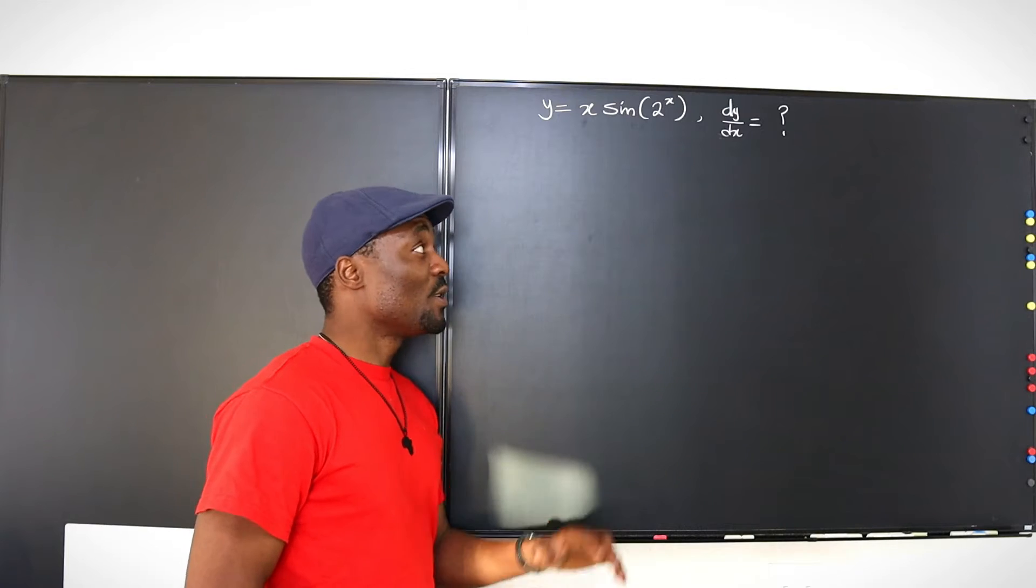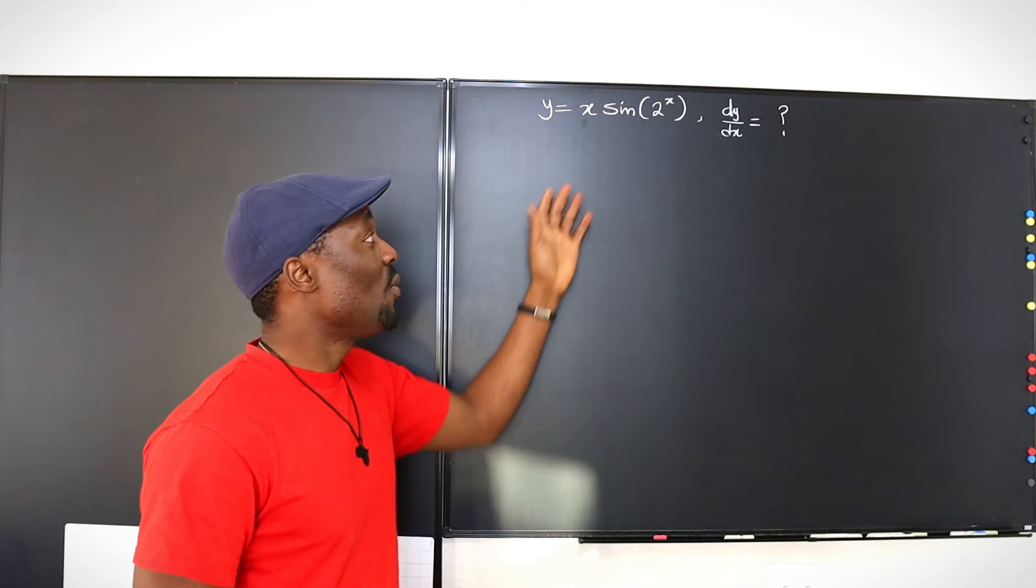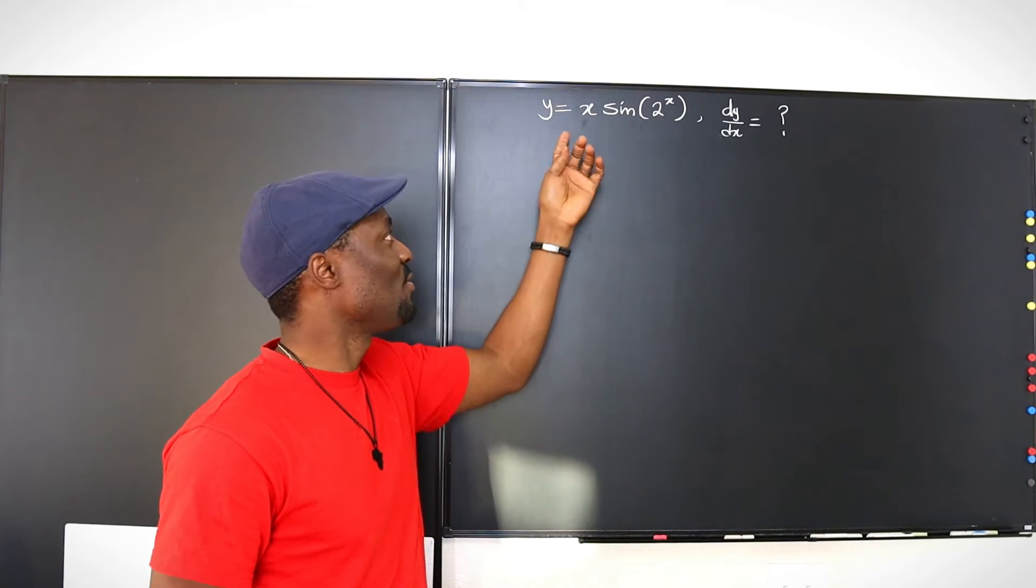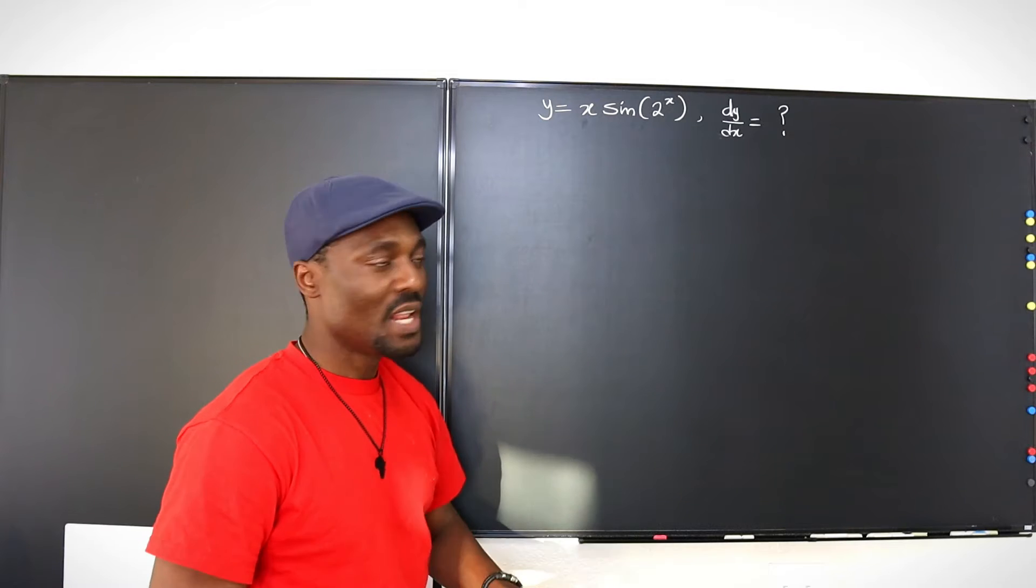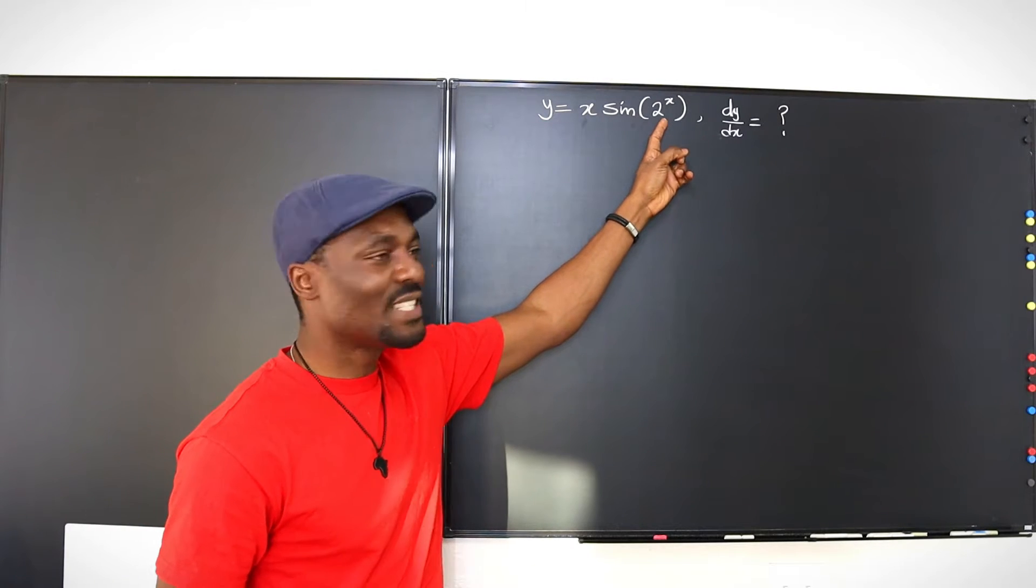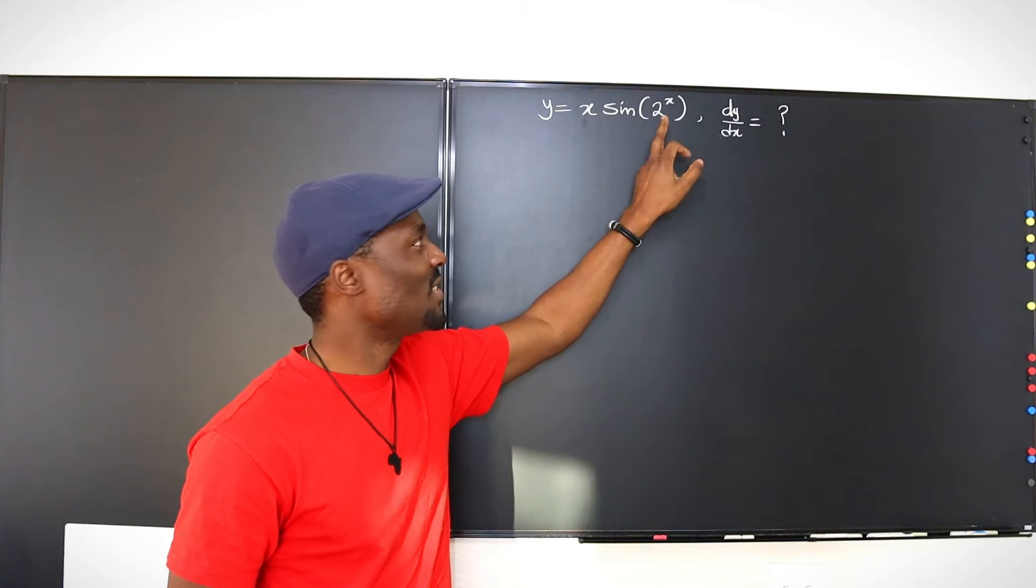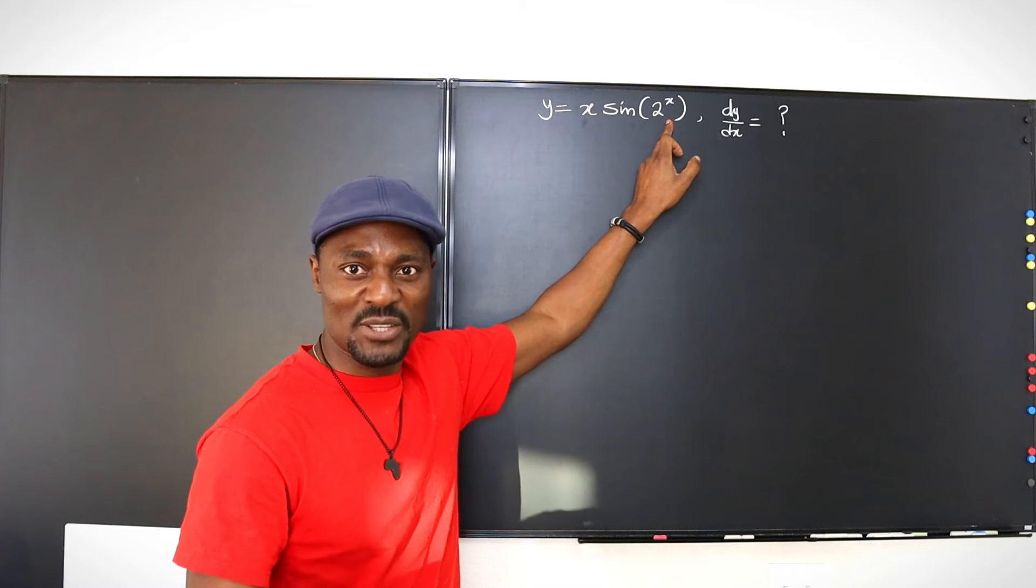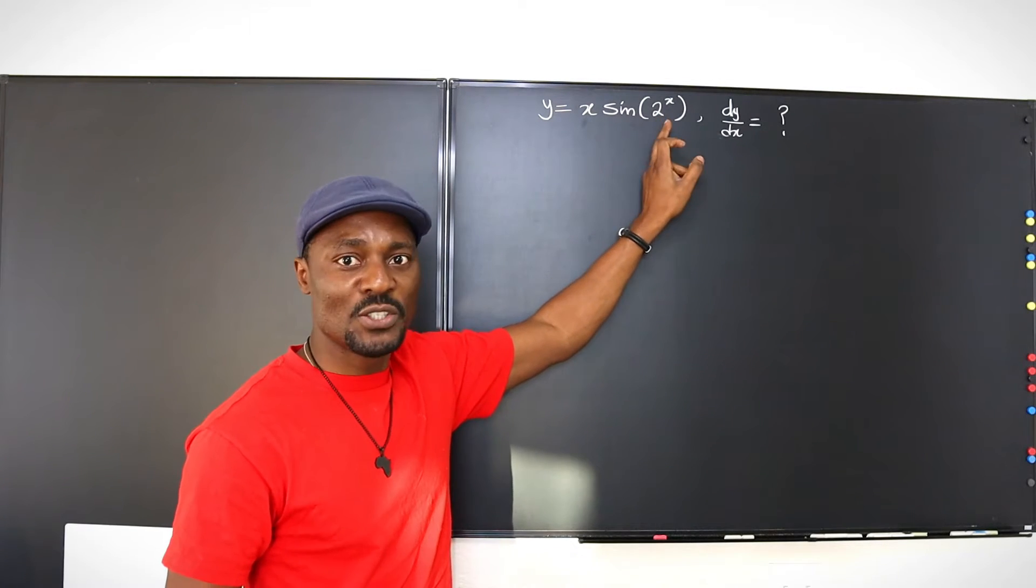Welcome to another video. So we're going to quickly solve this one where we have a product. We're going to apply the product rule to this one. The only problem is that this one is a composite function such that what's inside might require some extra skill if you didn't know what to do with this.